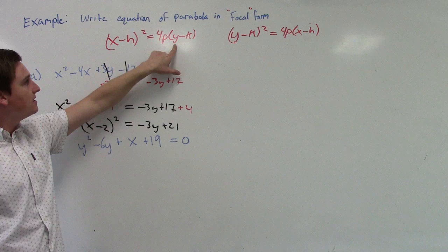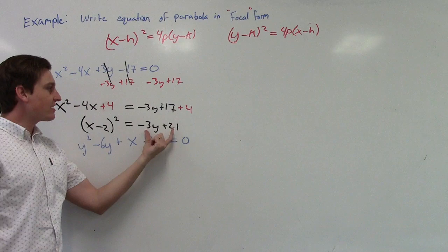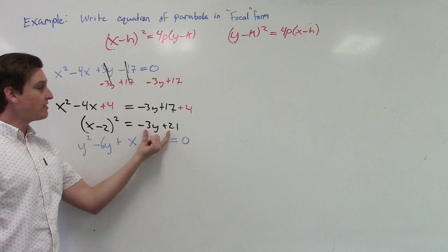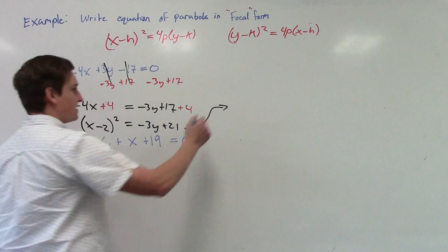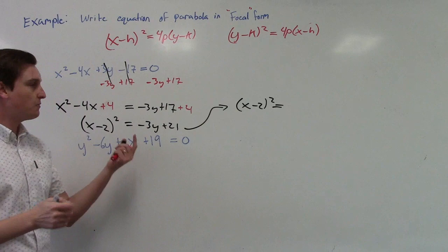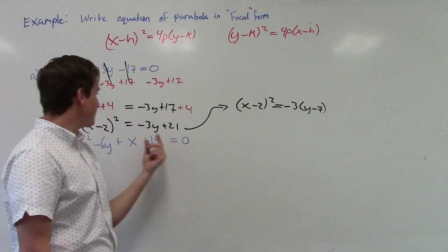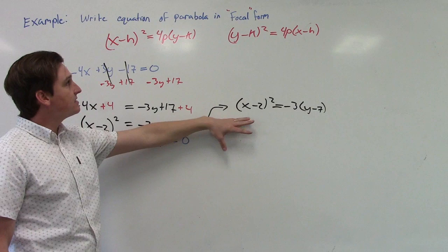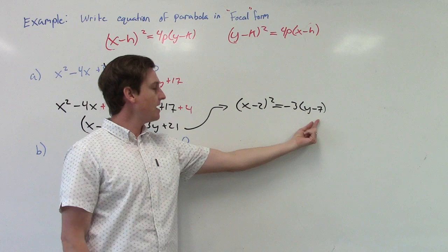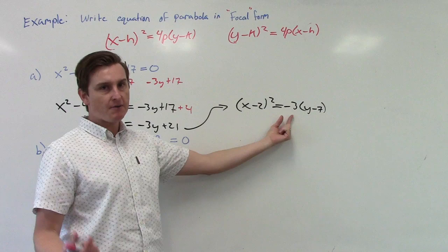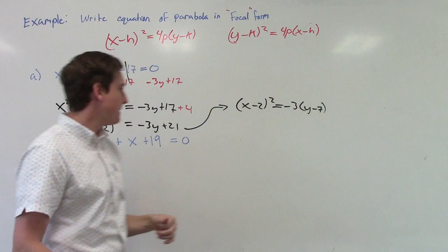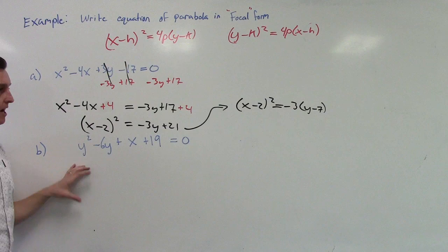Notice that we want some quantity times a y minus k in parentheses, but y doesn't have a number in front inside the parentheses — the number is outside. So we're going to have to factor out whatever is multiplying the y, which in this case is negative 3. Factoring out negative 3 from both terms, we still have x minus 2 squared on the left, and on the right we get negative 3 times y minus 7. Checking: negative 3 times y is negative 3y, and negative 3 times negative 7 is positive 21. Now we have this in focal form. The vertex is (2, 7), the focal width is 3, and the p-value is 3 divided by 4.